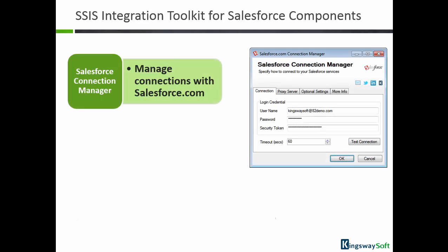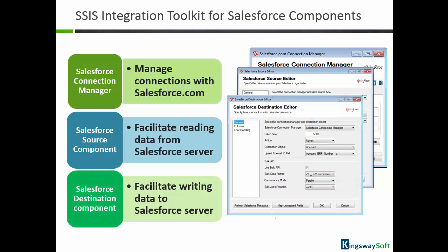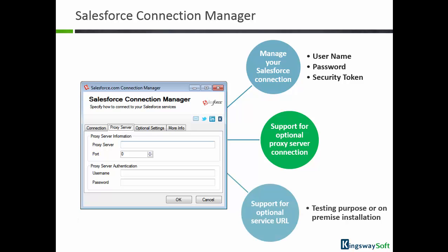These components include the Salesforce Connection Manager, the source component, and the destination component. The Salesforce Connection Manager allows you to specify how you want to connect to Salesforce.com. We also support optional proxy server connection as well as optional service URL. With the optional service URL, you can provide a sandbox service URL so that you can post transactions to the sandbox instance instead of the actual production instance of your Salesforce.com service.